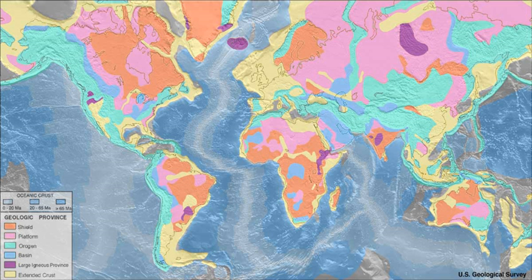If the orogeny is due to two continents colliding, very high mountains can result, e.g. the Himalayas. An orogenic event may be studied as a tectonic structural event, as a geographical event, and as a chronological event. Orogenic events cause distinctive structural phenomena related to tectonic activity, affect rocks and crust in particular regions, and happen within a specific period.